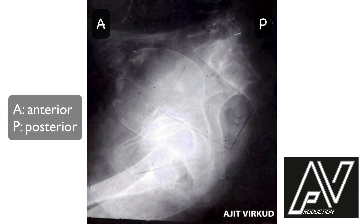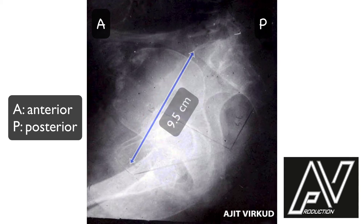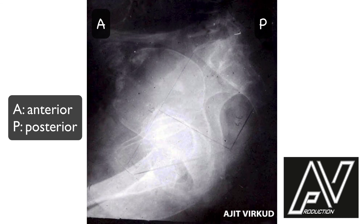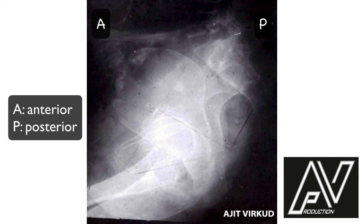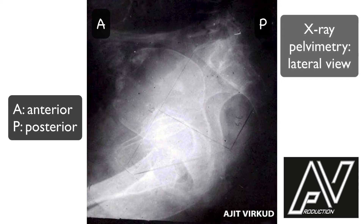This is a plain x-ray of the abdomen and pelvis, lateral view, well exposed, showing a single fetus in longitudinal lie, flexed attitude, cephalic presentation with vertex as the presenting part. The biparietal diameter has just entered the inlet, indicating that the head is engaged. The obstetric conjugate is measured at 9.5 cm and the posterior sagittal diameter of the outlet is also measured at 6.6 cm. The angle of pelvic inclination and sacral angle appear to be normal. Therefore, my diagnosis is lateral view of x-ray pelvimetry.